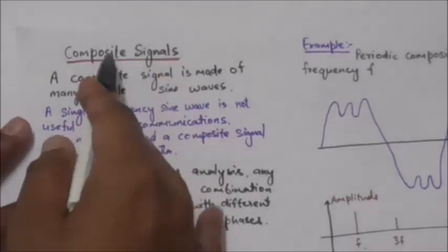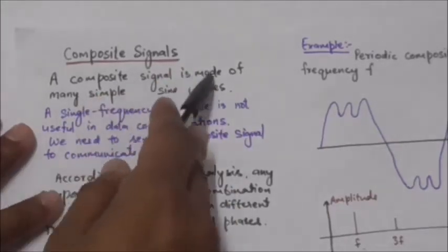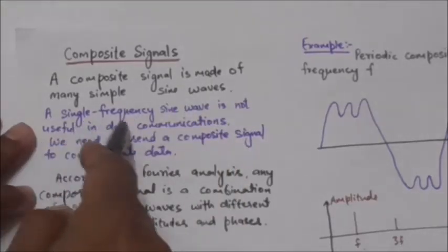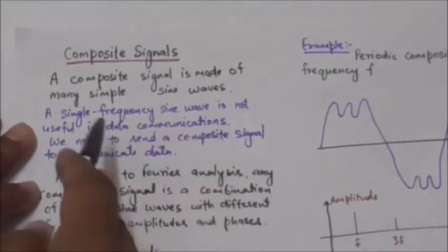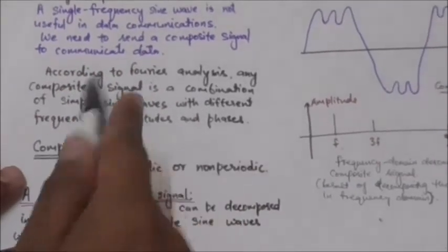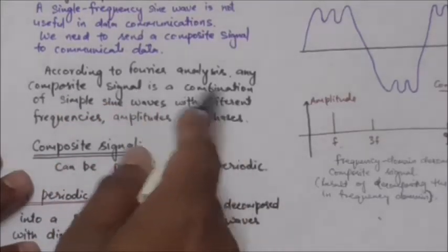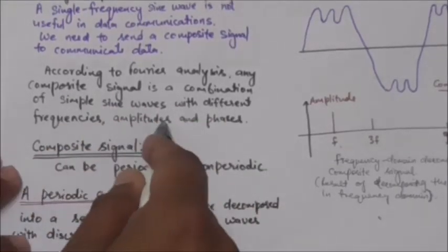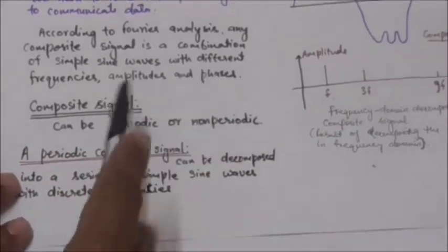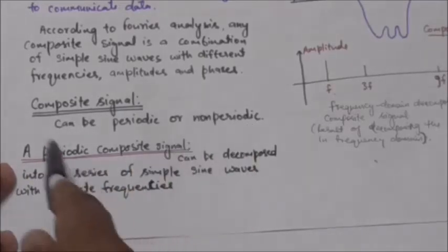Hello friends, welcome back. In this tutorial we will study about composite signals. A composite signal is made of many simple sine waves. A single frequency sine wave is not useful in data communications — we need to send a composite signal to communicate data. According to Fourier analysis, any composite signal is a combination of simple sine waves with different frequencies, amplitudes, and phases.